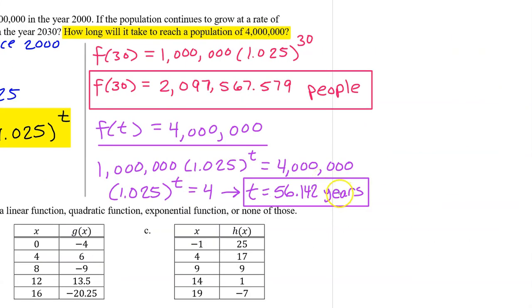The population will reach 4 million 56.142 years after the year 2000. In other words, early in the year 2056.